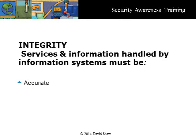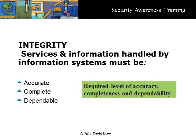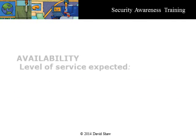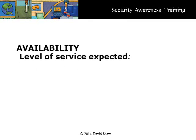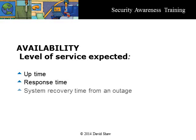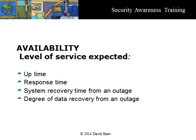Integrity is the required level of accuracy, completeness, and dependability of the programs, services, and information being handled by the information system or its assets. Availability is the required level of responsiveness of programs, services, and information being provided by the information system to support the stated mission. It covers uptime, the response time online, and business continuity from an outage or data loss. Availability is usually specified in a service level agreement.